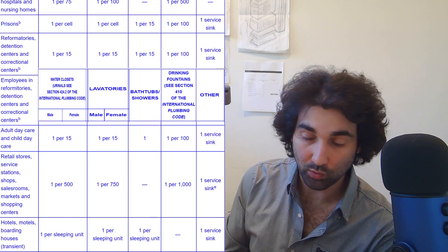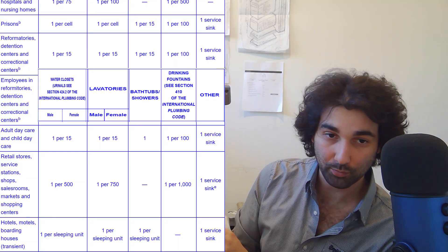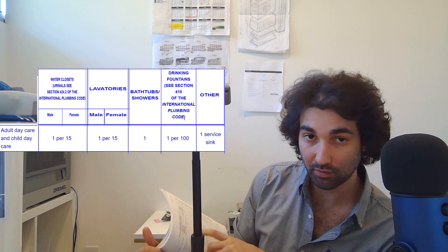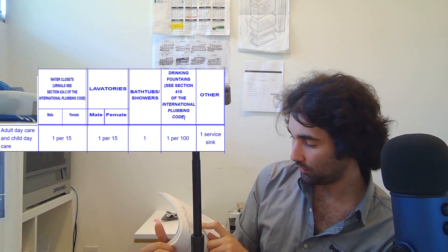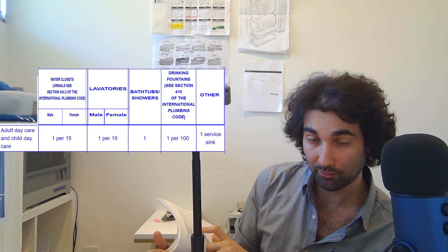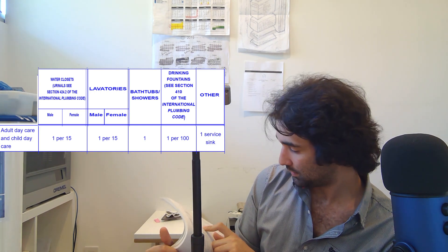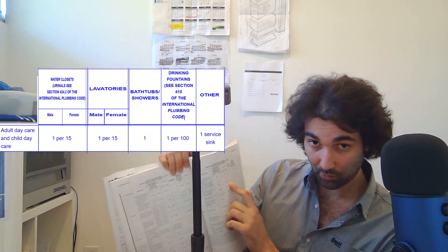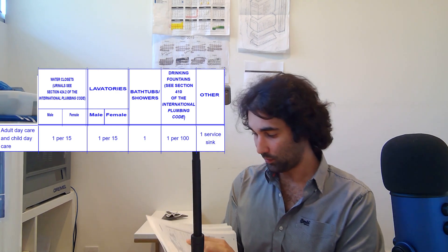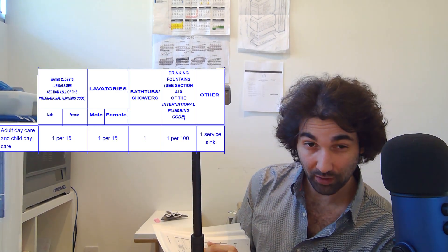Chapter 29 tells us we need one water closet per 15 occupants for males, one water closet per 15 occupants for females, one lavatory per 15 occupants for males, and one lavatory per 15 occupants for females. We also need one shower or bathtub for the space and one drinking fountain per 100 occupants. I don't think the design that was put in front of me satisfies these requirements — let's take a look.